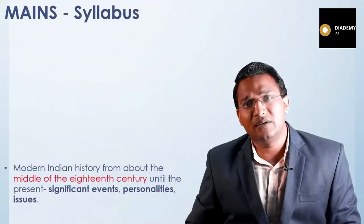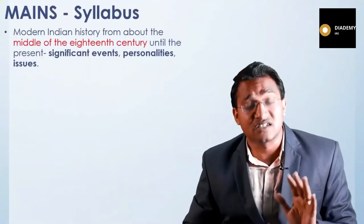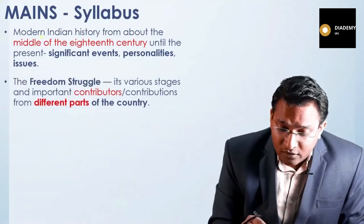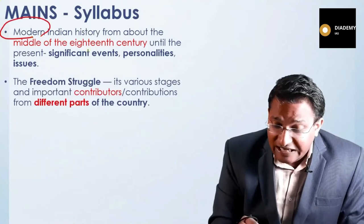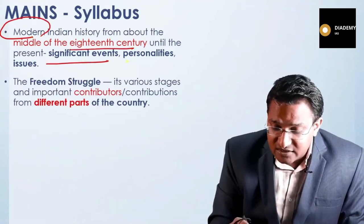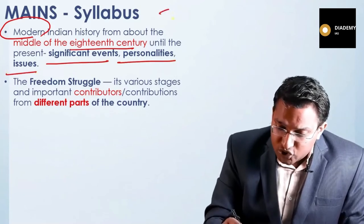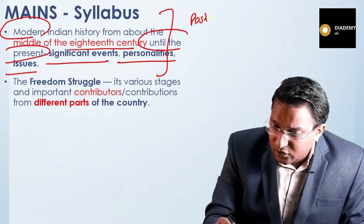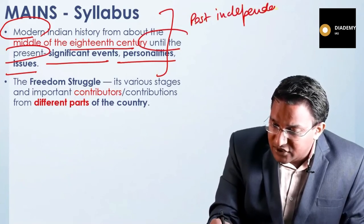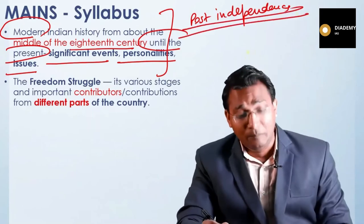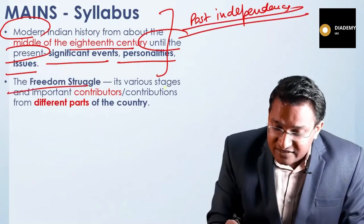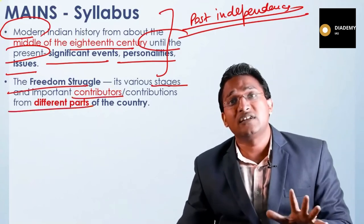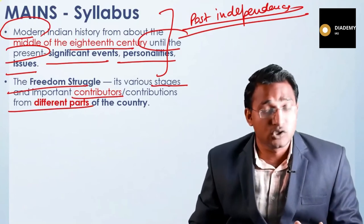In the mains, the syllabus states: 'Modern Indian history from about the middle of the 18th century until the present — significant events, personalities, and issues.' This means post-independence history is also part of the mains, though it was not included in the prelims. The freedom struggle — its various stages, important contributors, and contributions from different parts of the country — is explicitly mentioned and is a major focus.